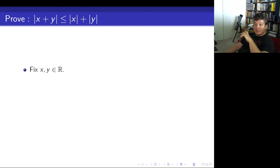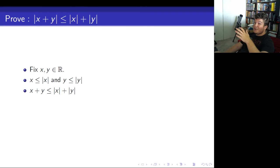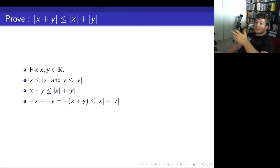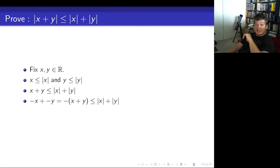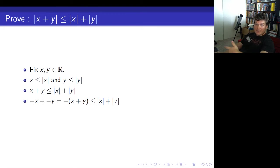We're going to fix two real numbers, x and y. We note that x is less than its absolute value, and y is less than its absolute value. Adding those two inequalities together gives us that x plus y is less than or equal to the right-hand side of the triangle inequality. Similarly, negative x is less than or equal to its absolute value, and negative y is less than or equal to its absolute value. Adding those gives us that the negative of x plus y is less than or equal to absolute value of x plus absolute value of y. Combining these two statements, using our third lemma, gives us our triangle inequality.